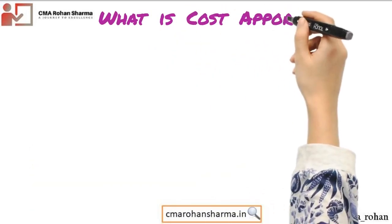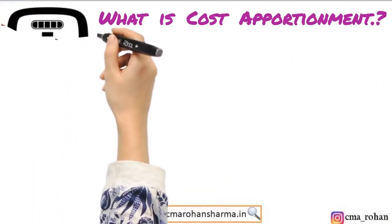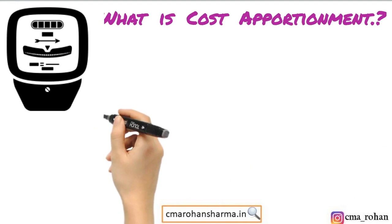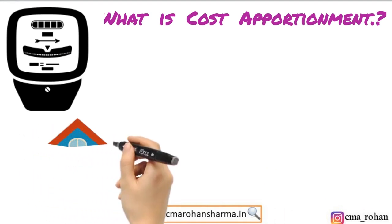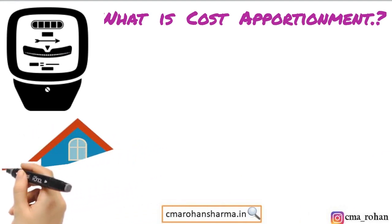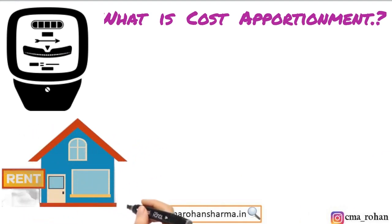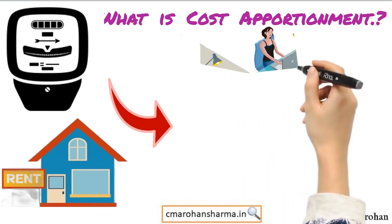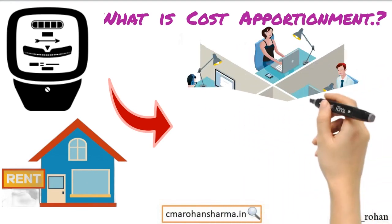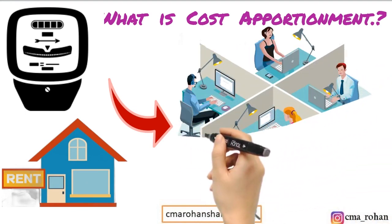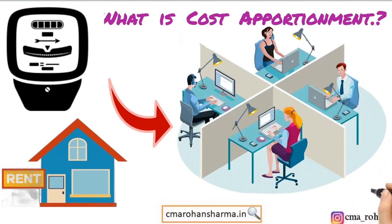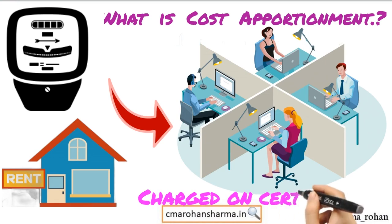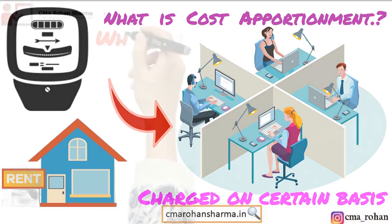What is cost apportionment? When items of cost cannot be directly charged to or accurately identifiable with any cost centers, they are prorated or distributed amongst the cost centers on some predetermined basis. This method is known as cost apportionment.